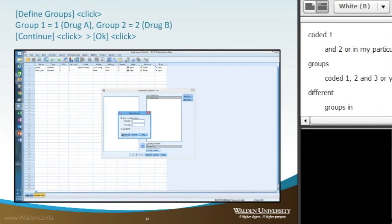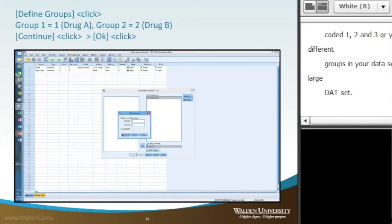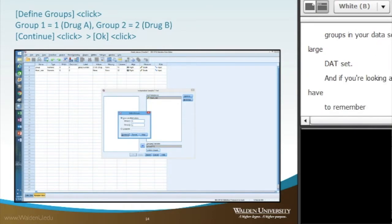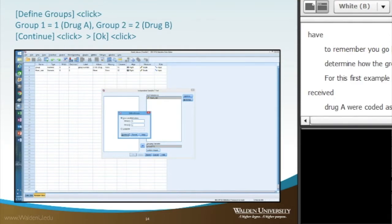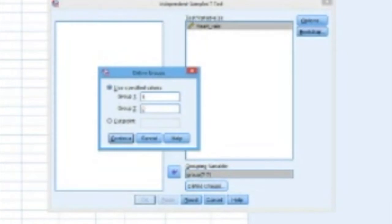If you just want to do individual comparisons, you have to remember and go back and look into the variable view to determine how the groups are actually coded. For this first example, the participants which received drug A were coded as one, and those that were given drug B were coded as two. So for my group one, I'm going to put in one, and for my group two, I'm going to put in two.